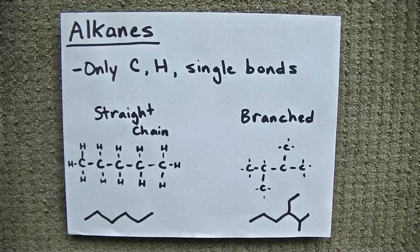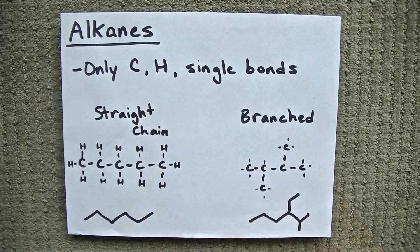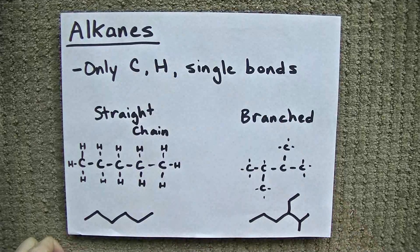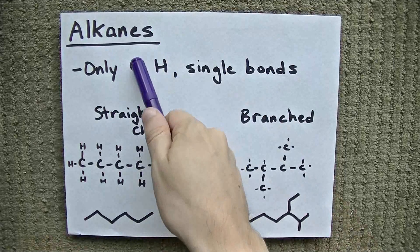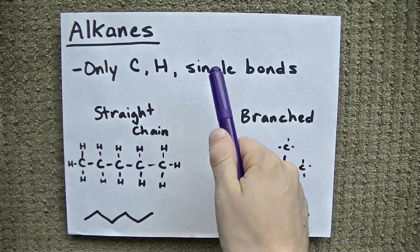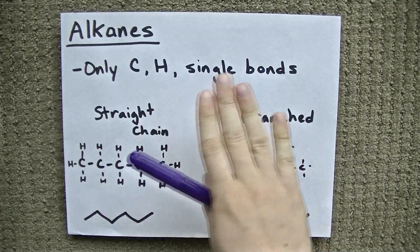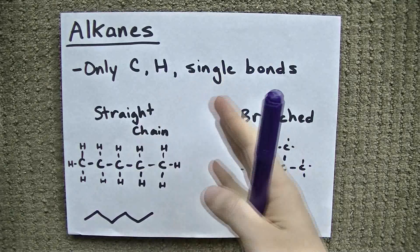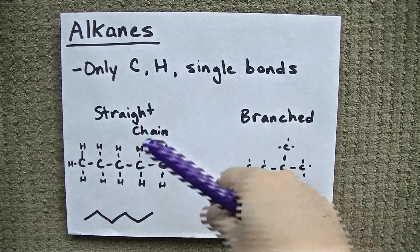I had a request for a video about alkanes, so here we go. Alkanes are molecules made only out of carbon and hydrogen and single bonds. If there's a double bond or a triple bond, it's not an alkane.